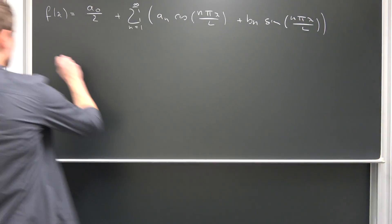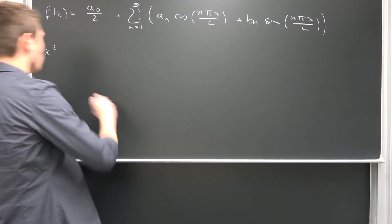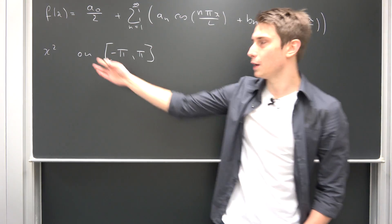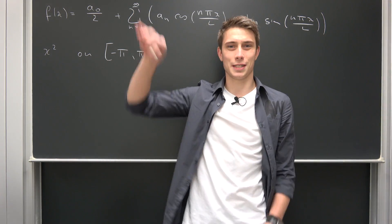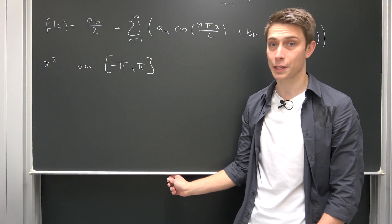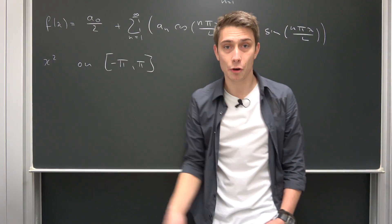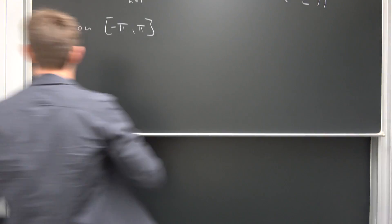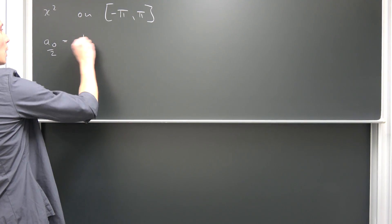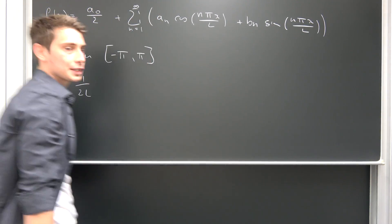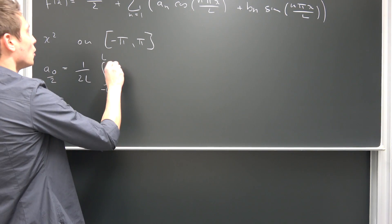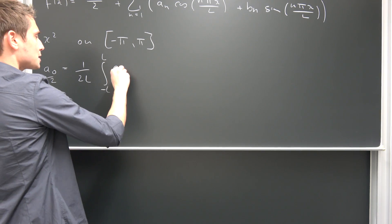We are going to take a look at f(x) = x² today — the Fourier transform of x² on the interval negative π to π. The good thing is x² is continuous everywhere on the real number line, so we can use a closed interval from negative π to π. Now we have to consider what a₀, aₙ, and bₙ actually are. Let's start off with a₀. a₀/2 is defined as 1/(2L) times the integral from negative L to L of f(x) dx.